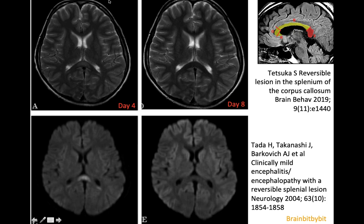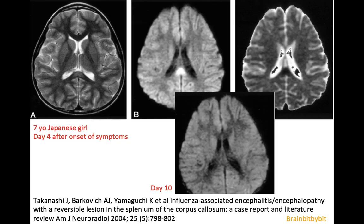In the majority of cases there is an ovoid lesion in the splenium of the corpus callosum with restricted diffusion that normalizes after a few days. Similar cases after influenza infection also showed hyperintensity and restricted diffusion in the corpus callosum. Sometimes it involves the entire corpus callosum or the entire splenium, and then you get a boomerang sign.